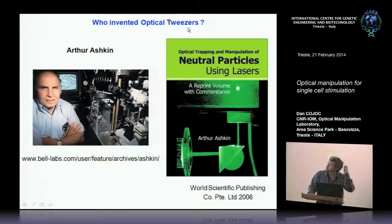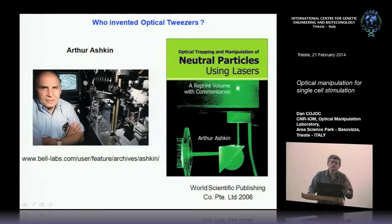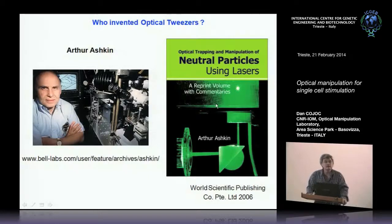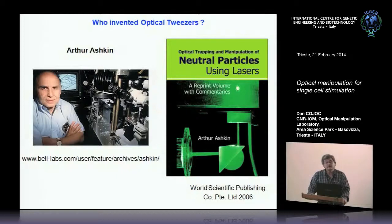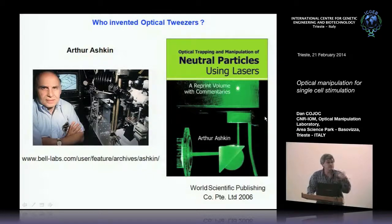Who invented the optical tweezers? This is Arthur Ashkin — a fantastic researcher. I want to spend a few words about him because he would deserve, not just in my opinion but in the community's opinion, the Nobel Prize — which he didn't get. His book is about 1,000 pages, but only half is his selected papers. You find everything there — I could find nothing more impactful published in Nature or Science from the point of view of physics and engineering.